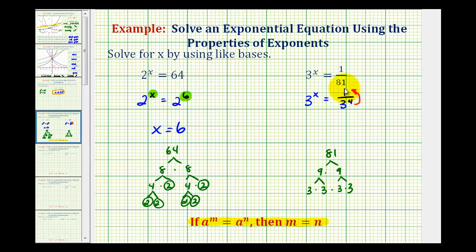Remember, if we do this, it's going to change the sign of the exponent. So we can now write this as 3 to the power of x equals 3 to the power of negative 4.